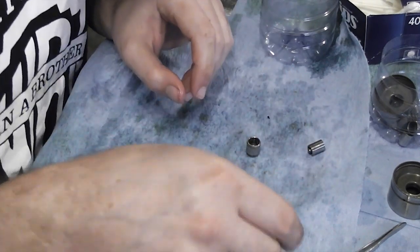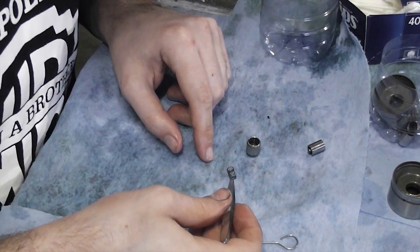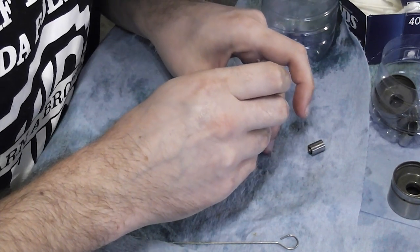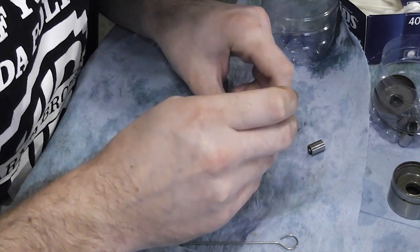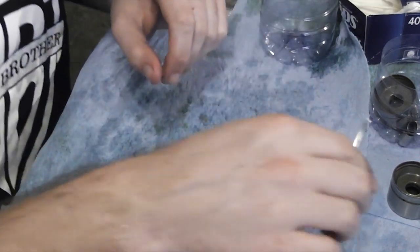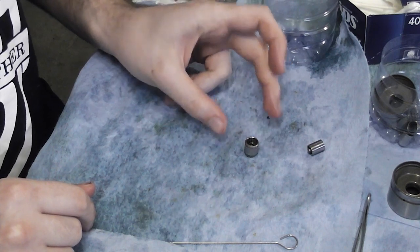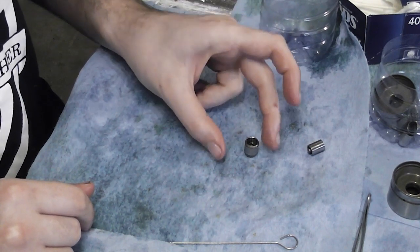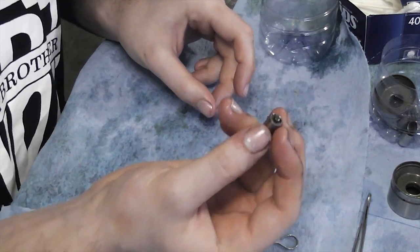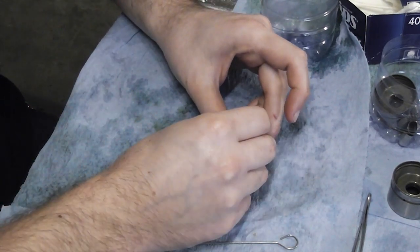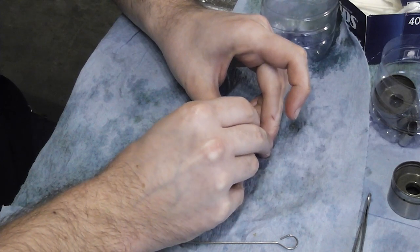So now you take the large spring, and you put it inside the large part of the piston. Again, if you can't get the spring to line up right, just tap it like that. Just take it and tap it a few times until it lines up. So now you take the cap end of the small piston, and you drop that down onto the big spring.